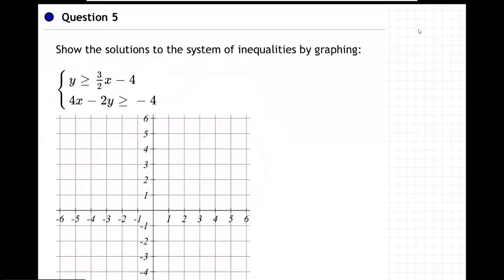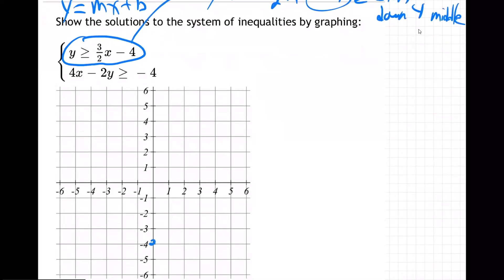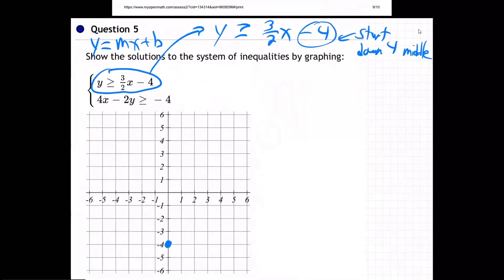So the first one's going to be a lot easier than the second one. So let me grab this one and bring it up here. This is y greater than or equal to 3 halves x minus 4. So where do we start? Well, remember y equals mx plus b, right? We start out here, and we start here. Start, and this is where you put your first dot, and this is going to be down 4 in the middle.